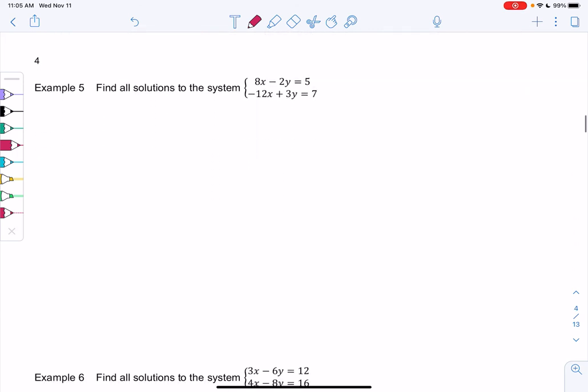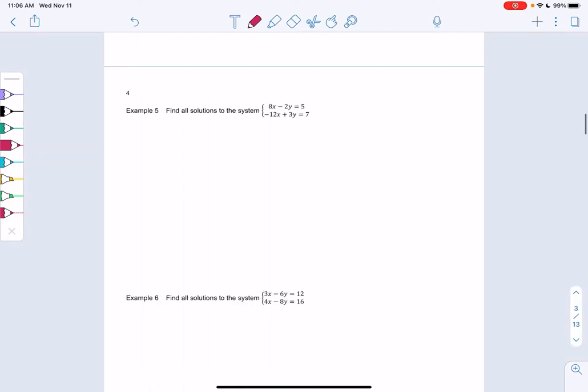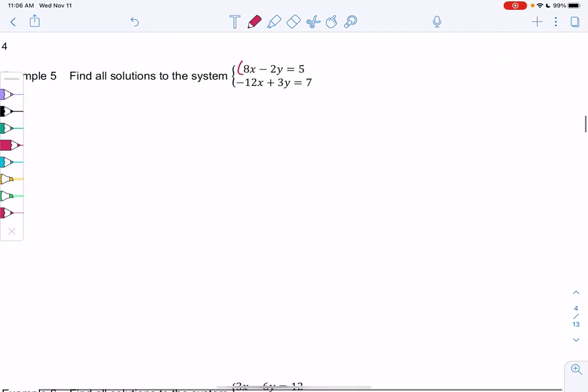So example five, we want to find all the solutions to 8x minus 2y equals 5 and negative 12x plus 3y equals 7. I don't have opposites and there's no easy, it's not like 8 times 2 is 12 or 2 times 2 is 3. So there's no easy opposites. So for me, what I'm going to do is I like the smaller numbers a little bit better. So I'm going to eliminate y by multiplying the first one by 3 to get me negative 6 and I'll multiply the second one by 2 to give me positive 6.